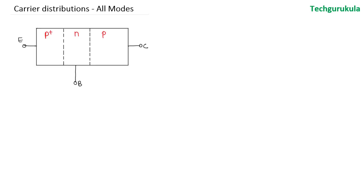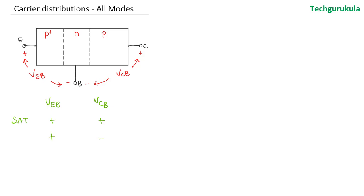I have taken here the PNP transistor where this potential is VEB and this potential is VCB, which means both the junctions are forward biased. Next, if VEB is positive and VCB is negative, this we said is the active region of operation.